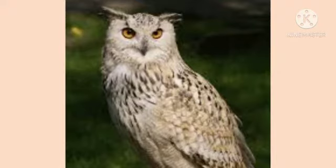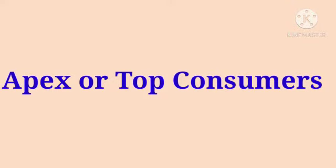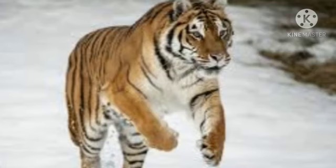Apex or top consumers use herbivores and carnivores as their food. No other animals feed on top consumers. They are also called carnivores. For example, tiger and lion.